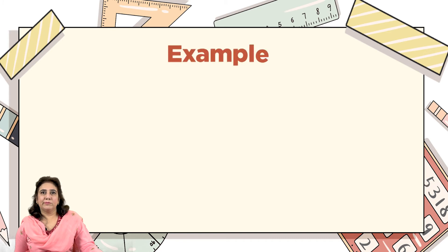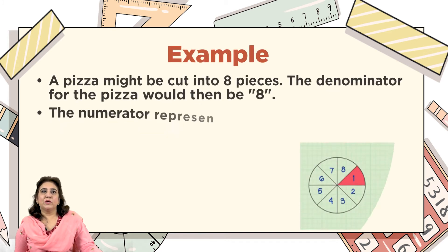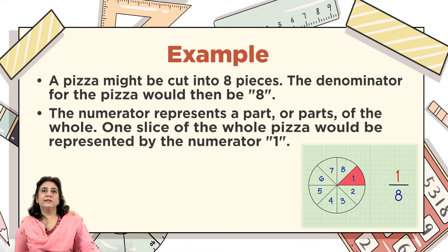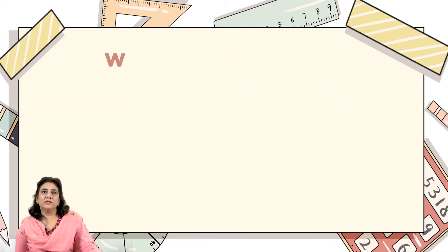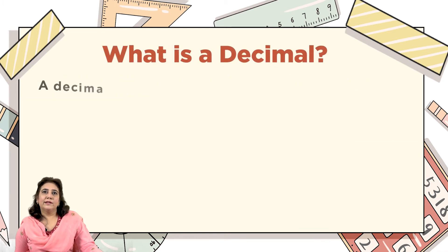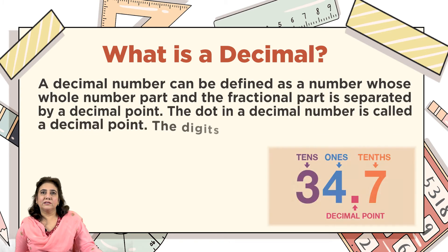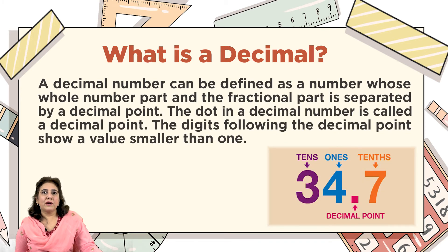For example, a pizza might be cut into eight pieces — the denominator for the pizza would be eight. The numerator represents a part or parts of the whole. One slice of the whole pizza would be represented by the numerator one.